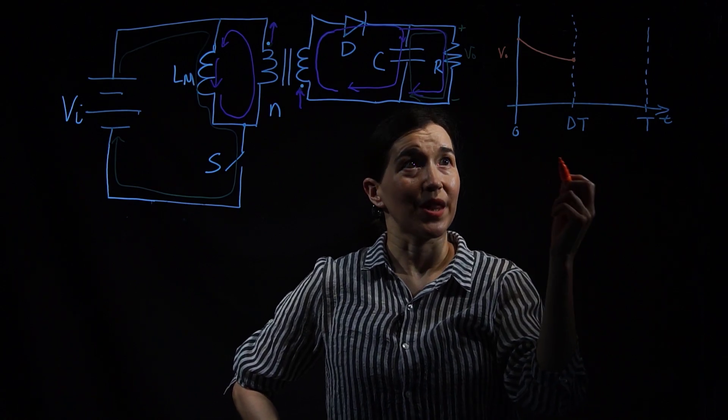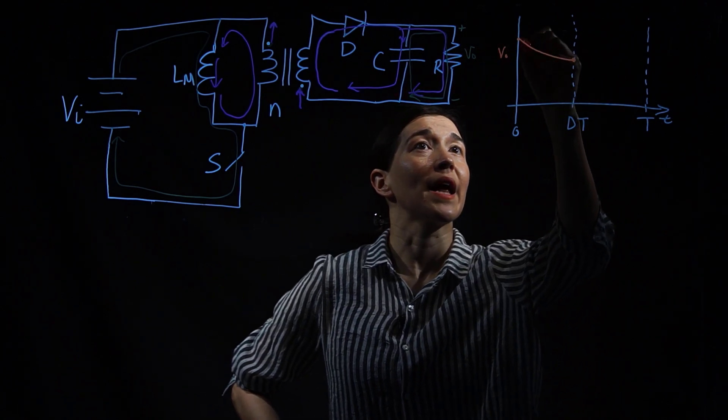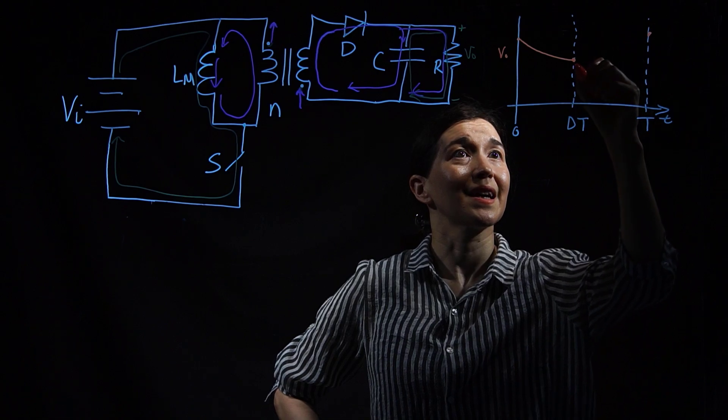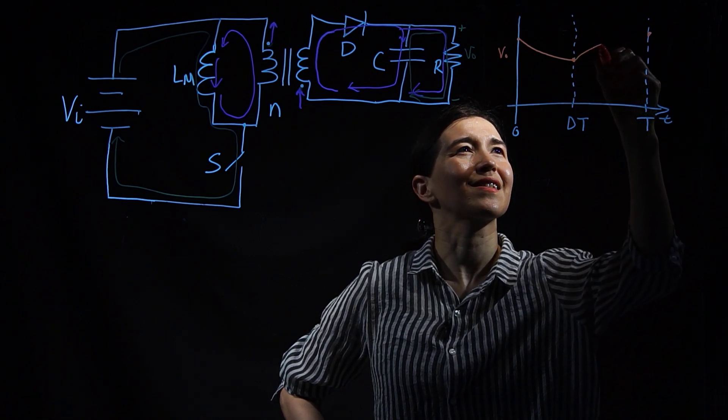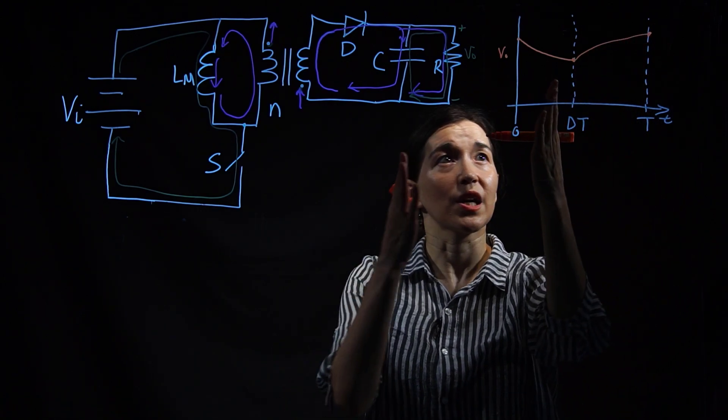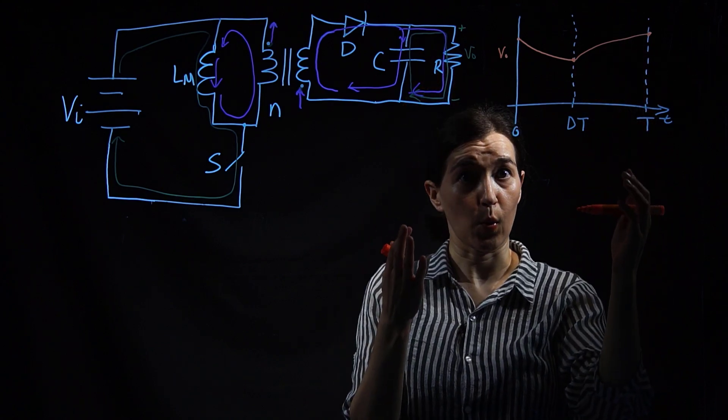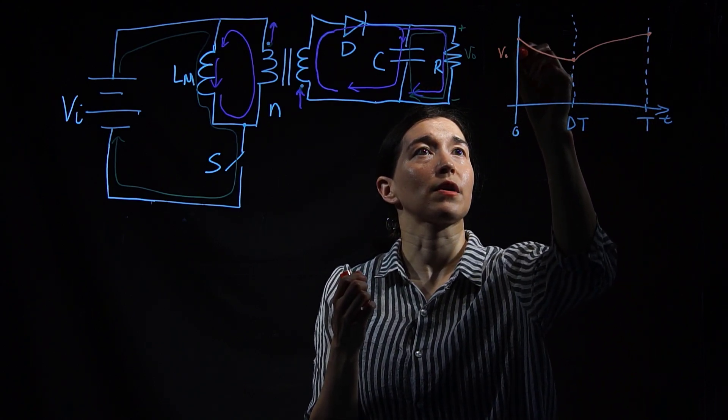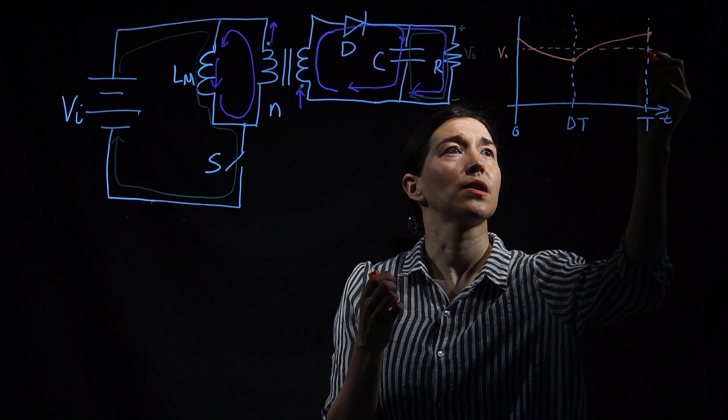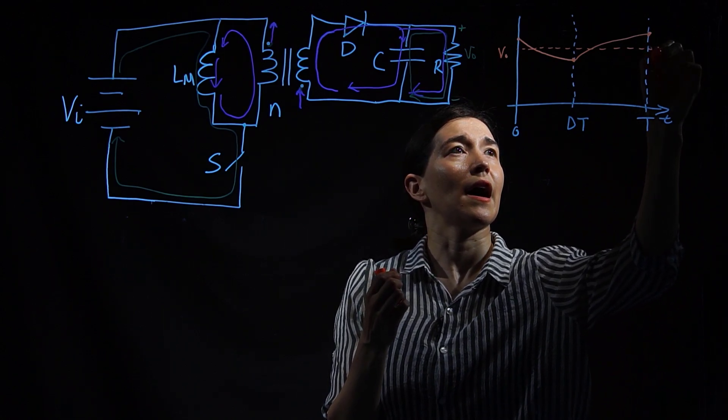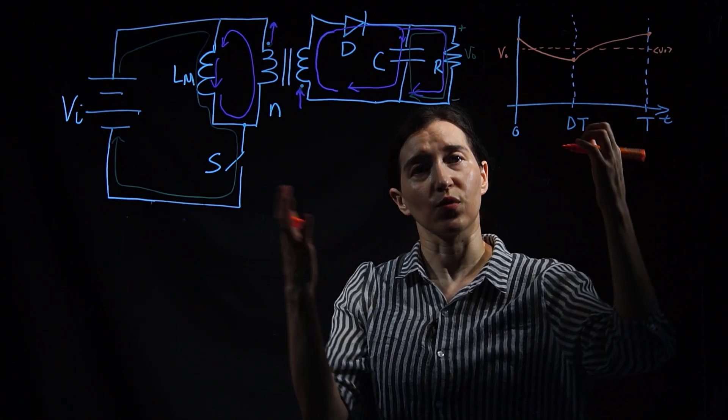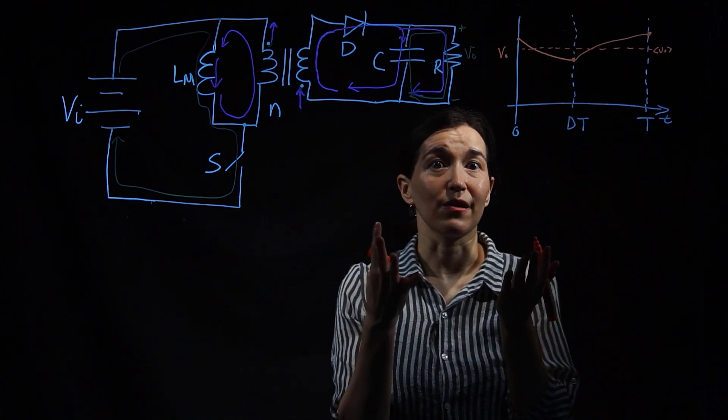What that means is it's going to be charging up, and because we're assuming it is in average steady state it's going to be going up to the exact same point here. Just as a reference, the average value here would be average V out, which would be whatever you've already calculated the value to be.